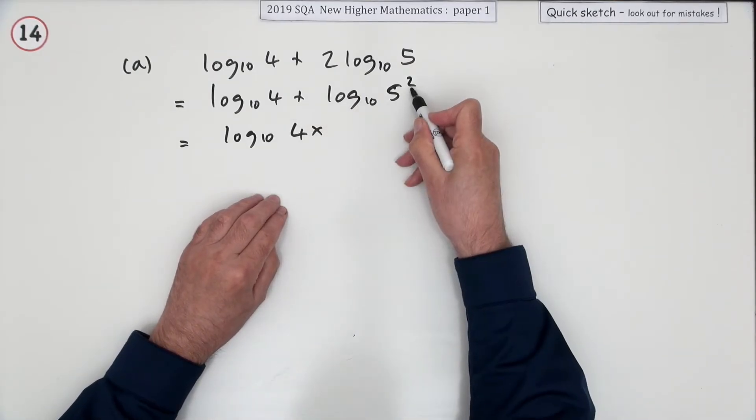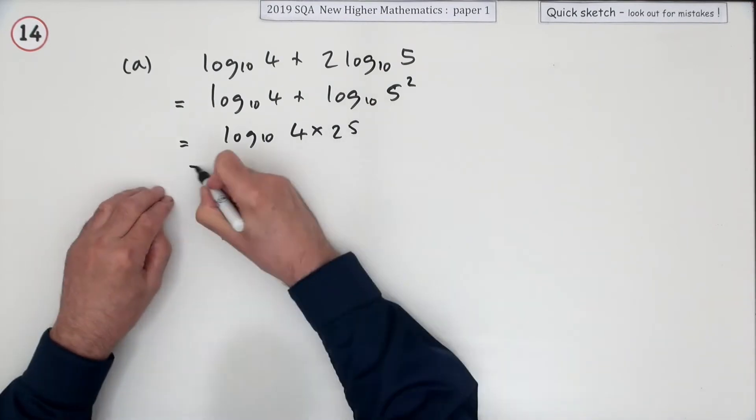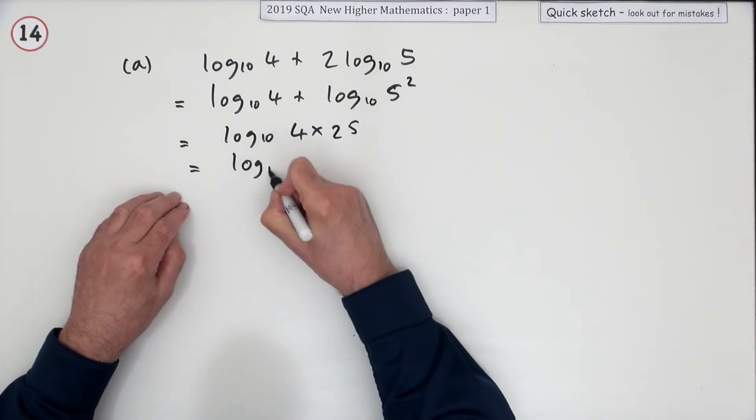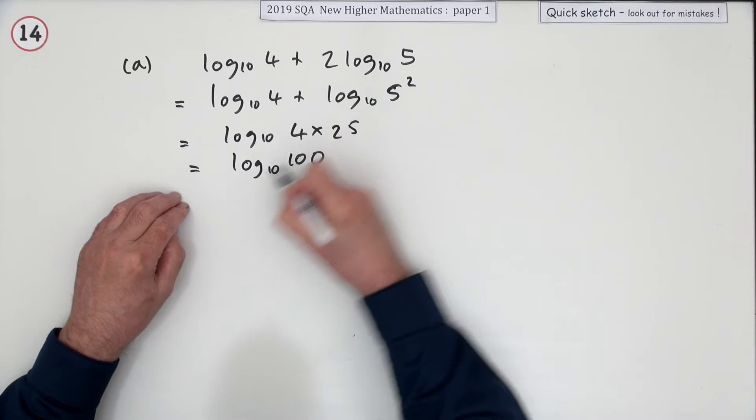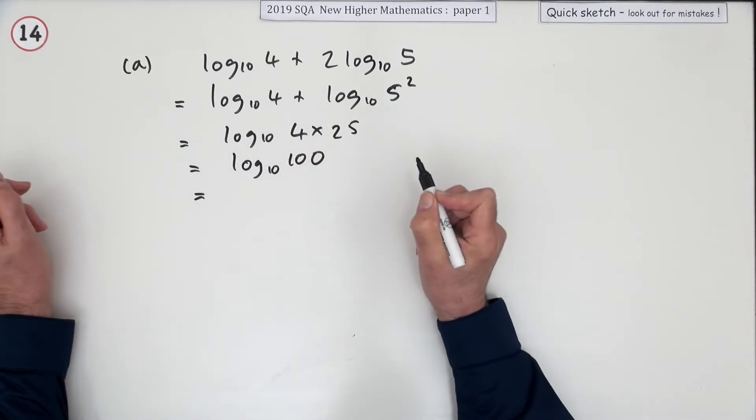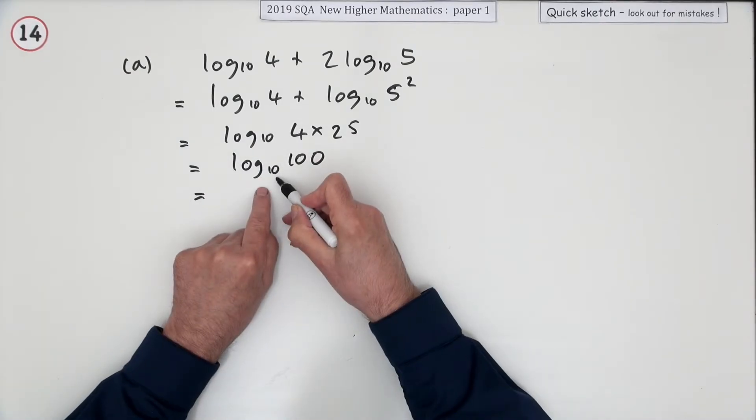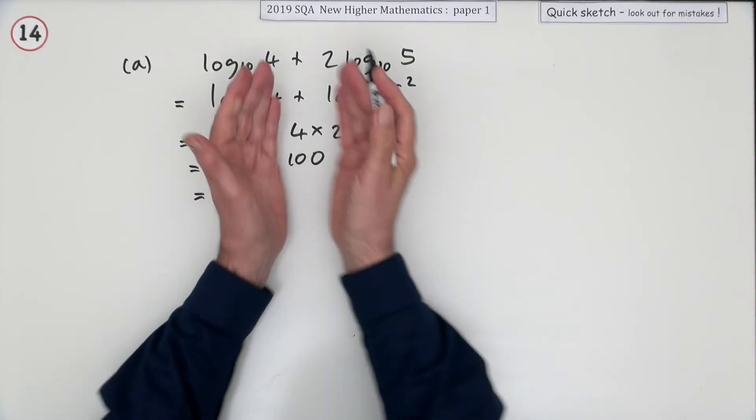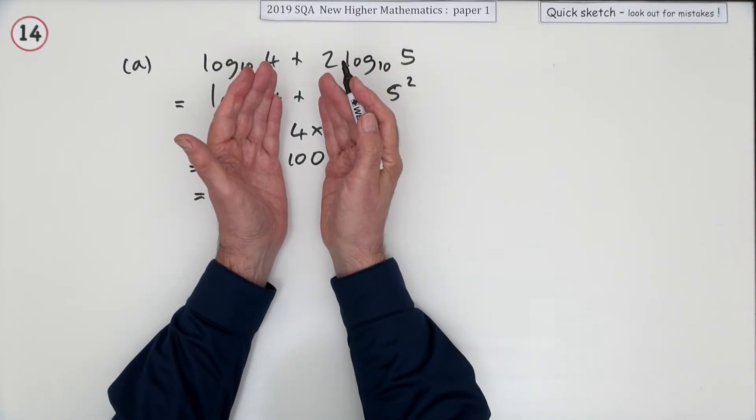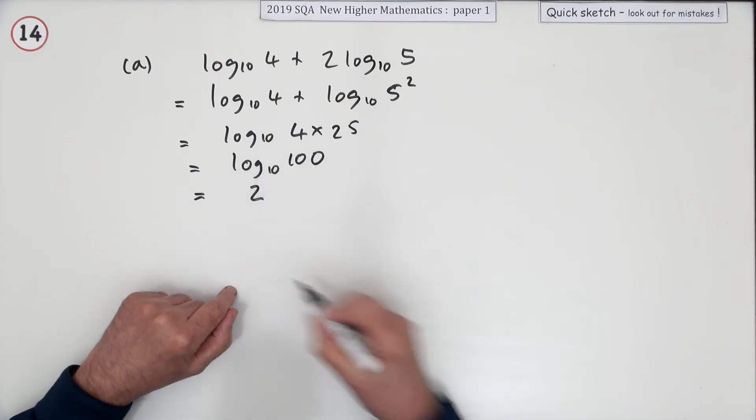And 5 squared is 25, so that's log base 10 of 100. Now without any further ado, you just interpret what that means. Log base 10 means what power of 10 is this, what power of 10 makes 100? That's 2.